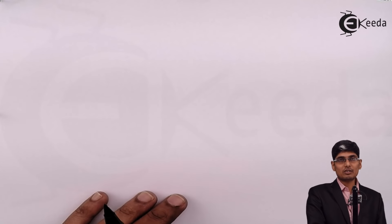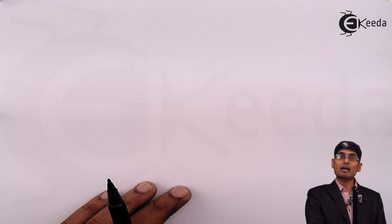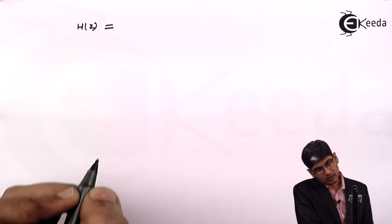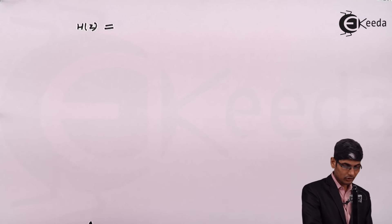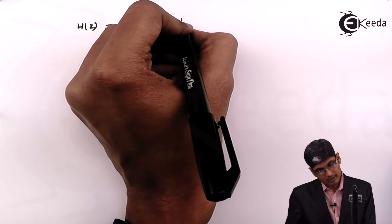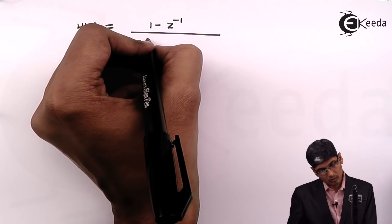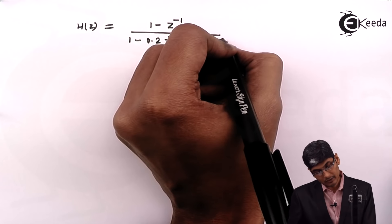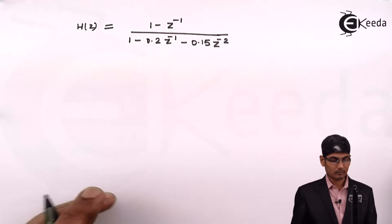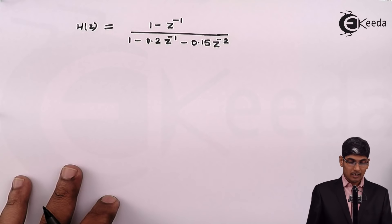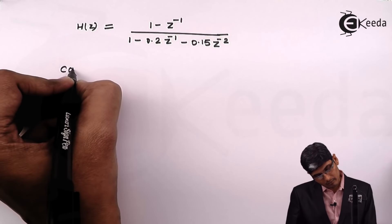Hi friends, today we are going to see how to design cascade and parallel structures of IIR filters. Let us take a problem: obtain the parallel and cascade form of realization of the given transfer function H(z) = (1 − z⁻¹) / (1 − 0.2z⁻¹ − 0.15z⁻²). They have specified cascade and parallel, so you cannot use Direct Form 1 or Direct Form 2 directly. Let us start with the cascade form.